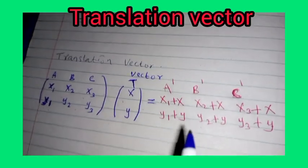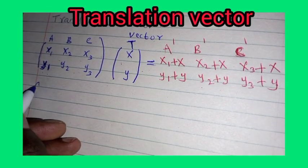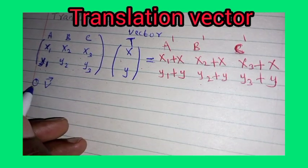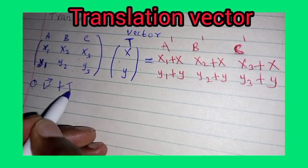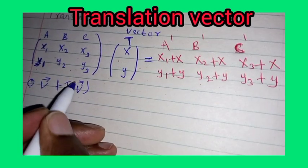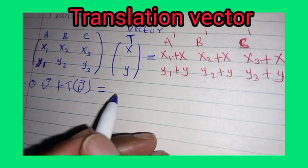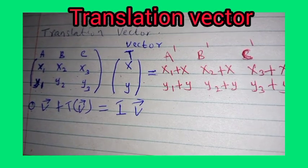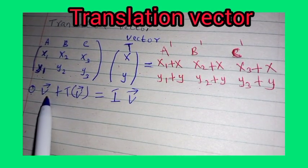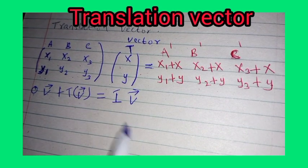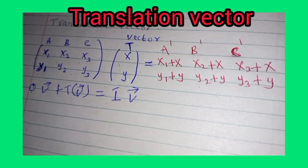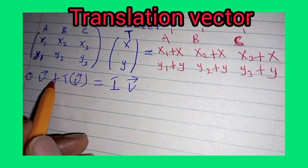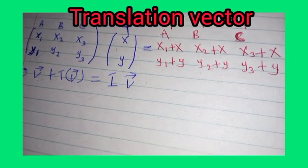So, if you are given the object vector and the translation vector, to get the image vector, you simply add them: object vector plus translation vector gives you the image vector.